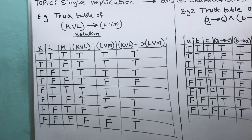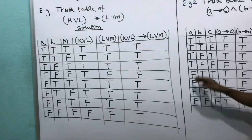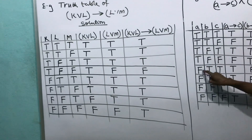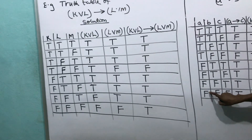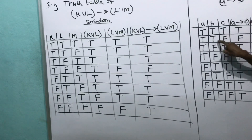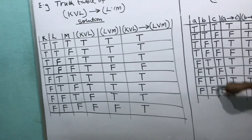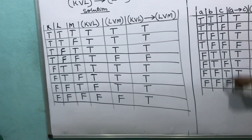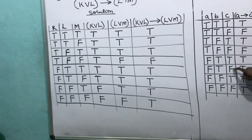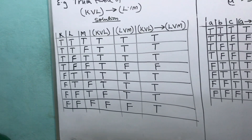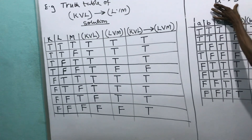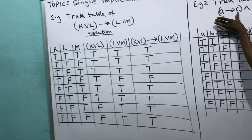Let's join the variables. I have to bring the argument of A: true, true, true, true, false, false, false, false. Then B: false, true, true, false, false, true, true, false, false. Then the argument of C: true, false, true, false, true, false, true, false. Then I start — I will either do this or do this first before the other.